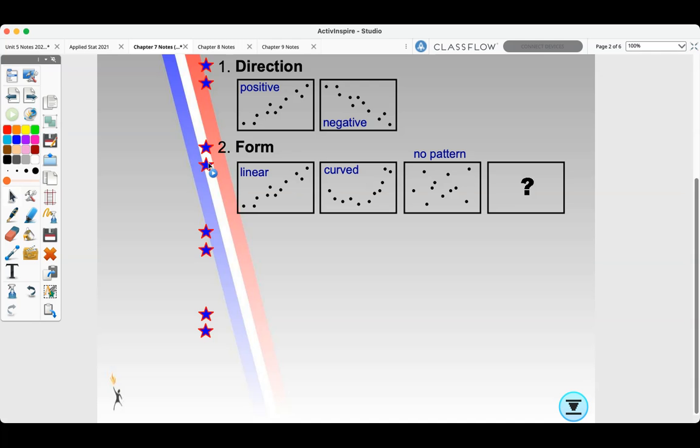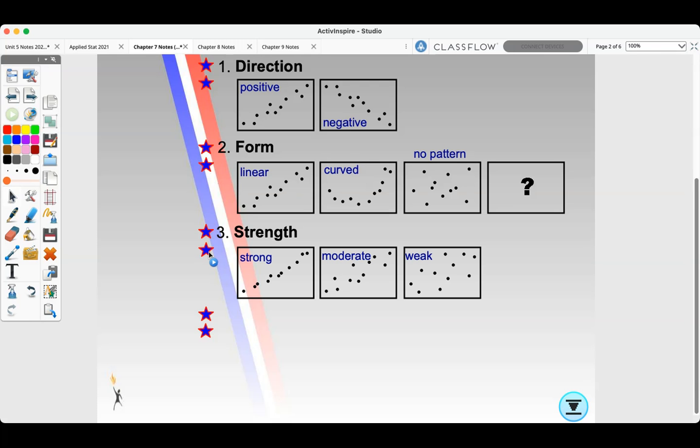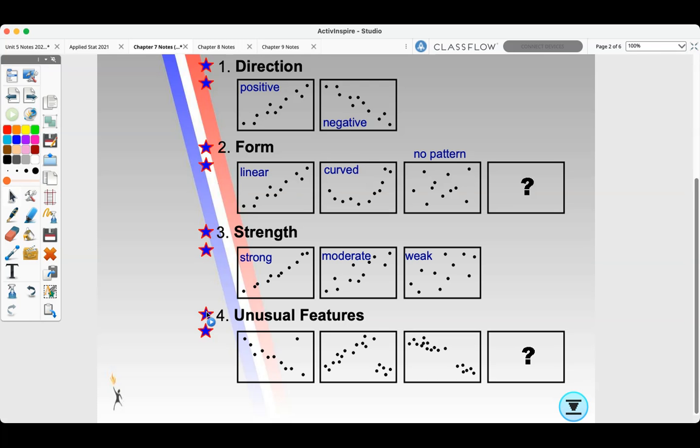Or do you have a question mark about the form? Could it look logarithmic or sinusoidal? The strength? Strong, moderate, or weak? And any unusual features? Are there outliers, a cluster, or a gap, or some other unusual feature?